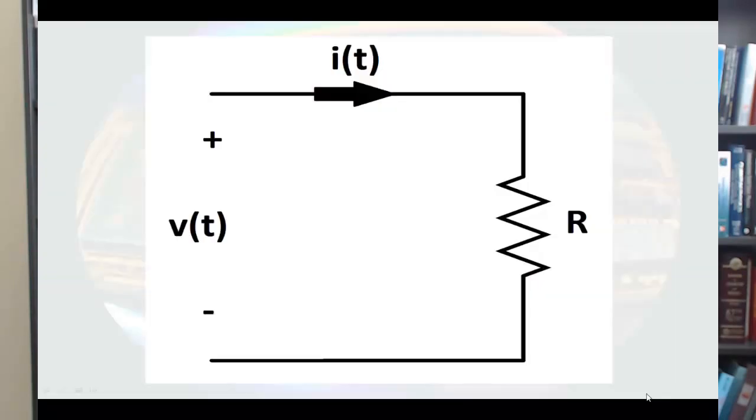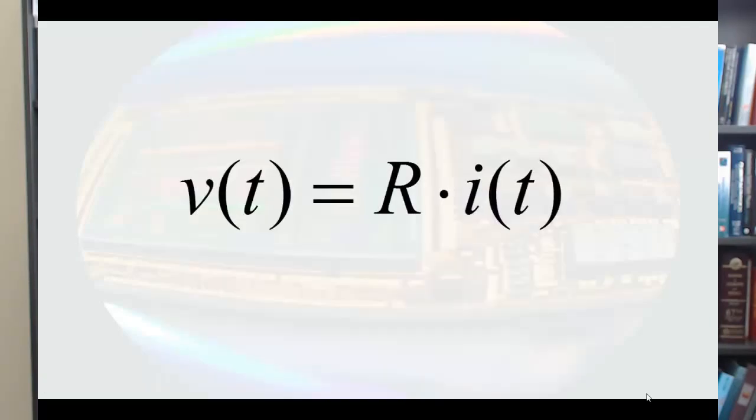When we want to represent a resistor on paper, we use a zigzaggy line. So, Ohm's law, expressed pictorially, would look like this. And we would represent the relationship between the voltage and the current as V of T equals R times I of T.